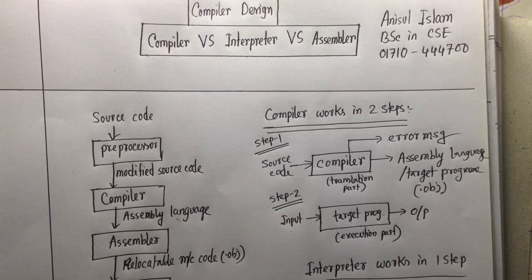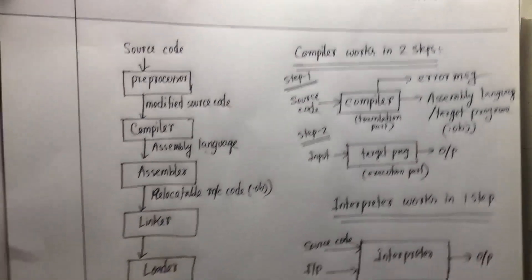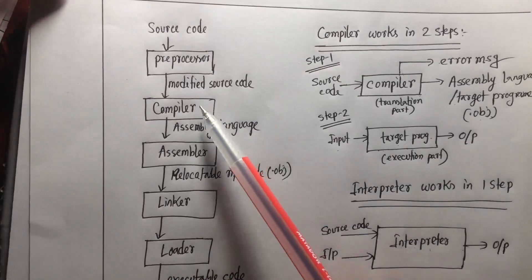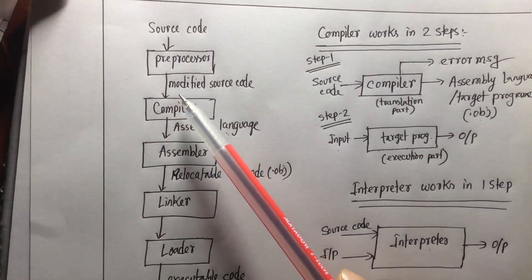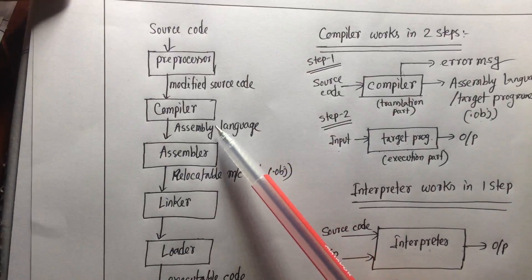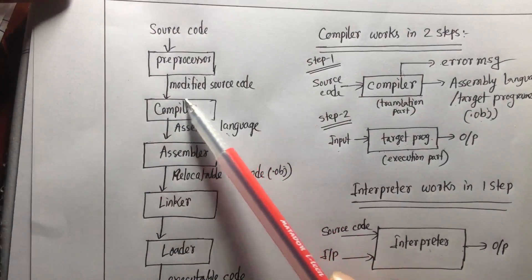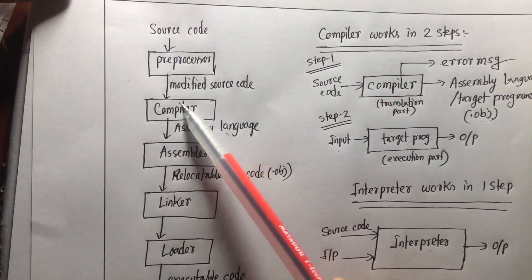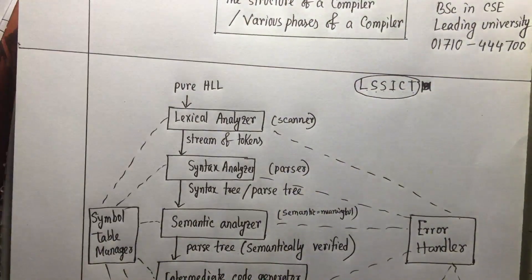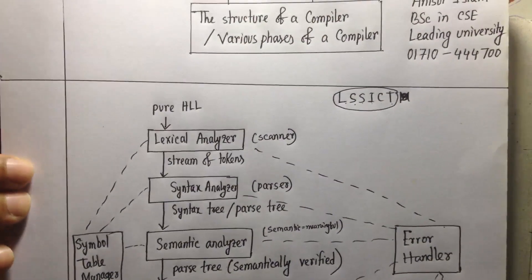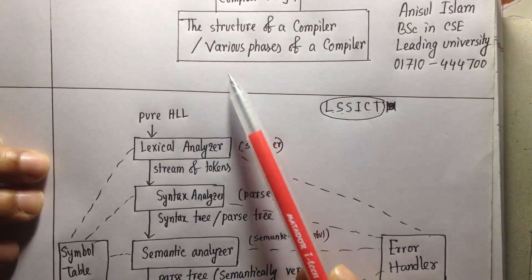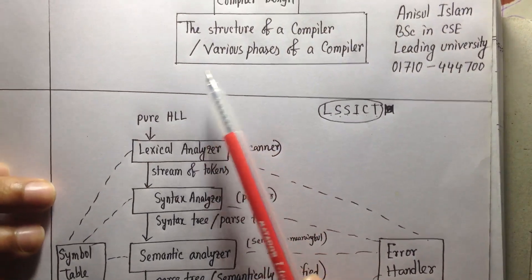I am going to show you the compiler, interpreter, and assembler. I will also show you the compiler design. I would like to use a modified source code for assembly code. So, let me show you how we are going to cover the compiler designer.